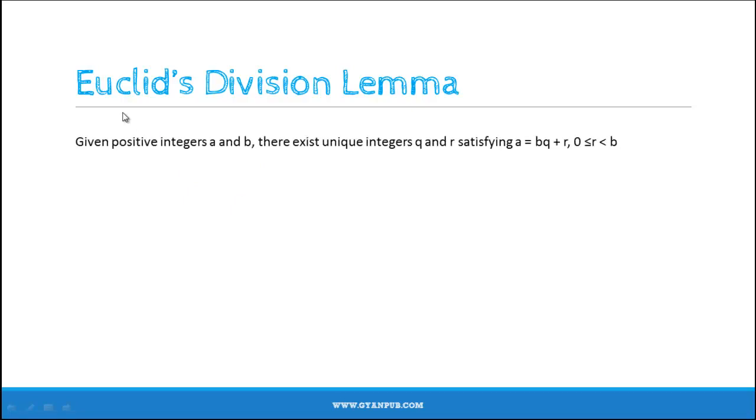Now, Euclid's division lemma states that given positive integers a and b, there exist unique integers q and r satisfying a equals bq plus r, where r lies between 0 and b.